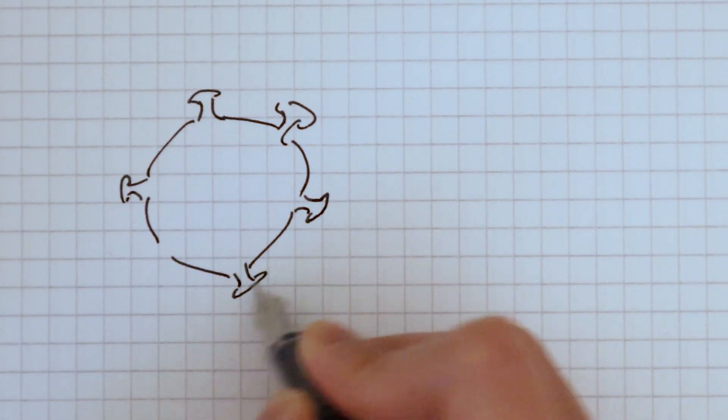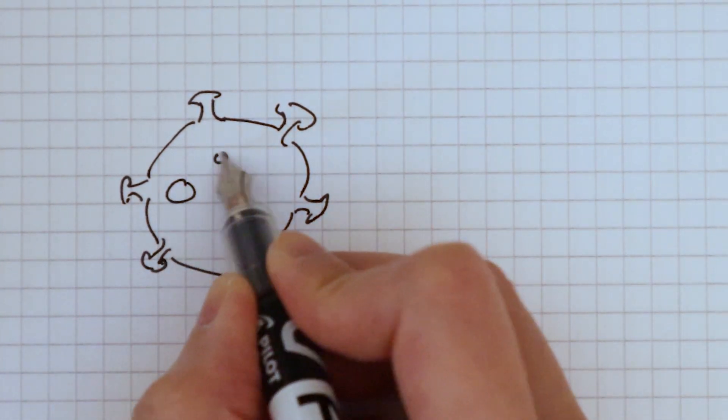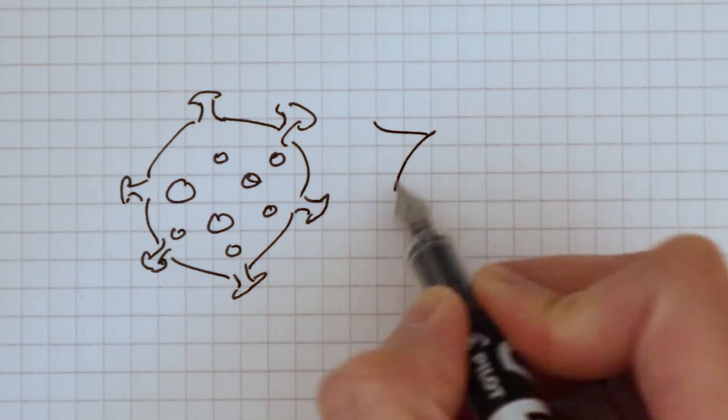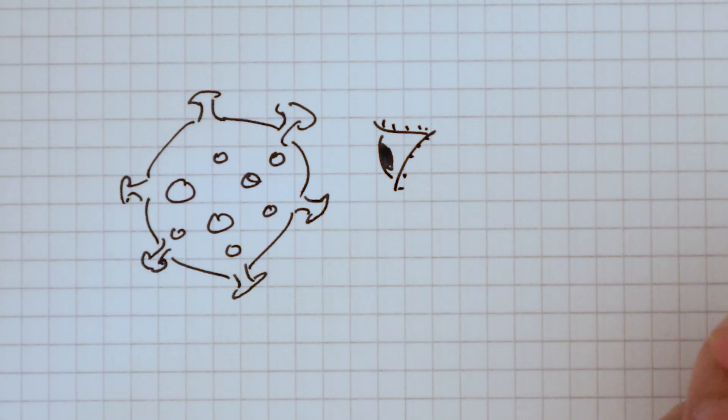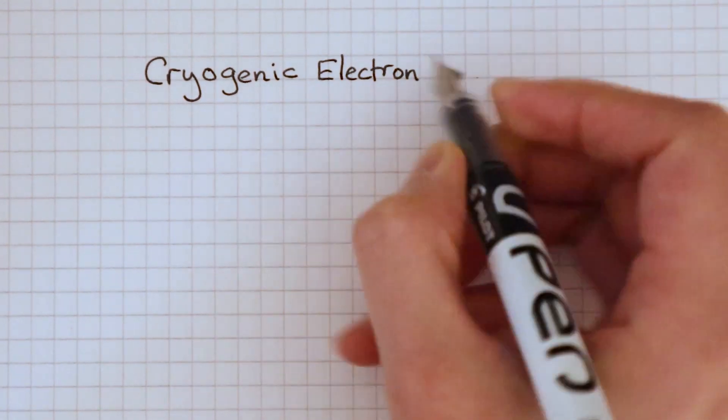But how did biologists and medical experts figure out a structure if we are unable to see a virus with our naked eye? This is when we need to use what's called cryogenic electron microscopy.